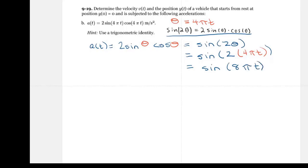And now we actually have something that we can integrate. Because I can find the integral of the sine of 8π T dt without any problem. We have a formula for that. This is going to be equal to the negative cosine of 8π T divided by 8π plus C.